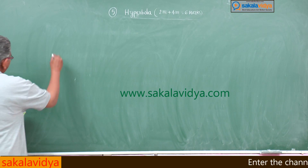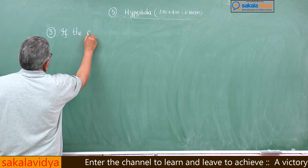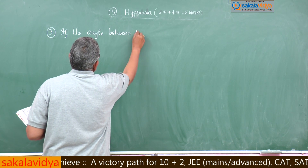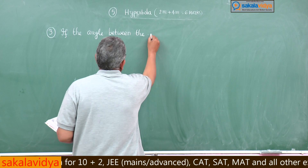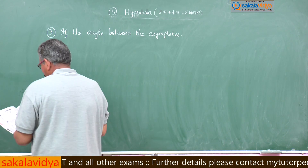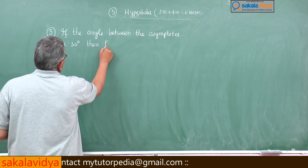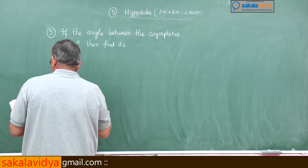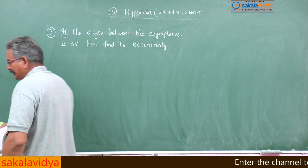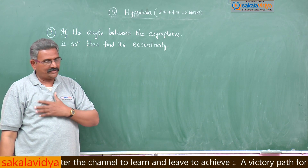Third problem: if the angle between the asymptotes is 30 degrees, find its eccentricity. This is a very important problem for two-mark questions as well as in engineering entrance examinations.